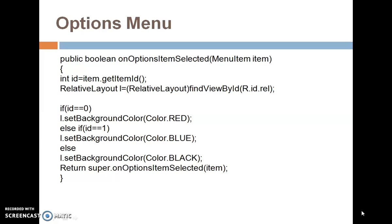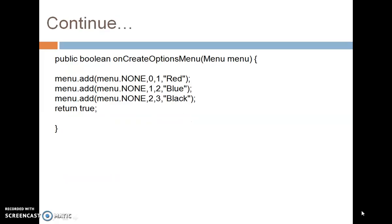Then we return super.OnOptionsItemSelected(item). This is the first method implemented programmatically for the Option Menu. The second method is public boolean onCreateOptionsMenu, in which we can add items to the menu using the add method, which contains the group, order ID, item ID, and the item name — the label displayed on the item itself. We call menu.add providing these four parameters.